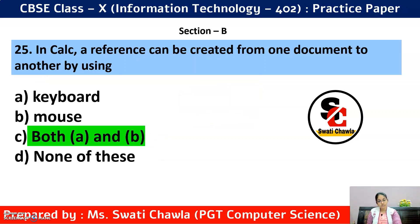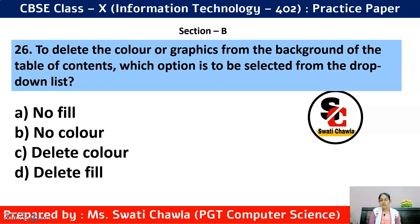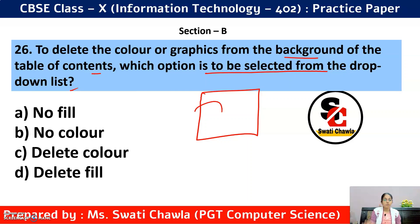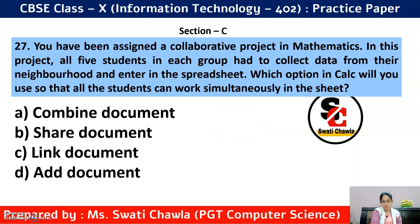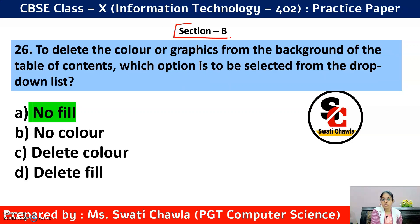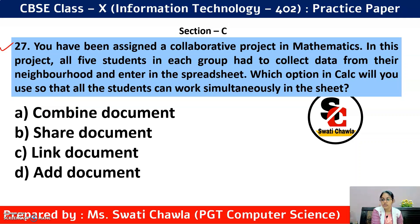Question 26: To delete the color or graphics from the background of a Table of Content, which option is to be selected from the drop-down list? If you want to remove the background graphics or color, use option A — No Fill. That completes Section B up to question 26. From question 27 onward, we move to Section C.